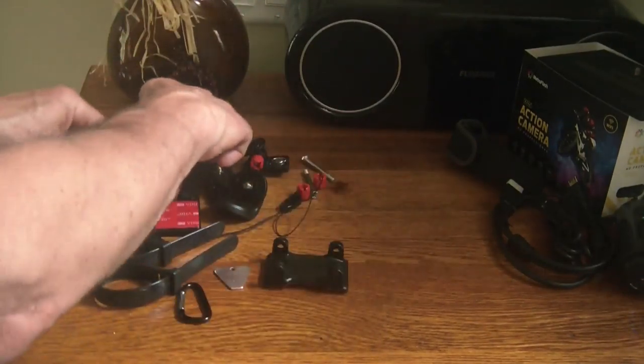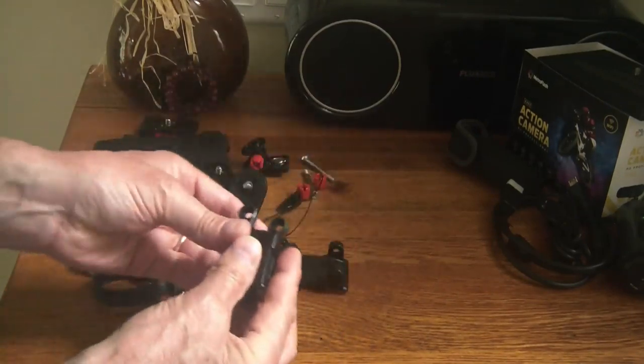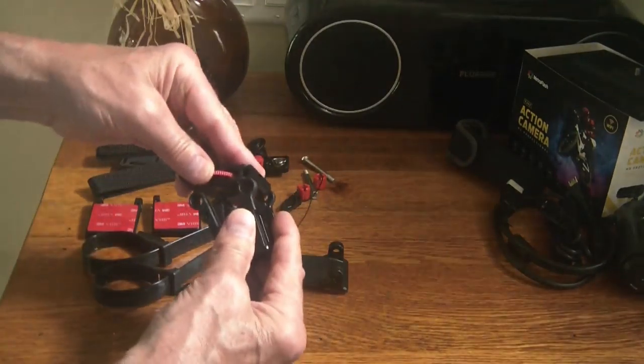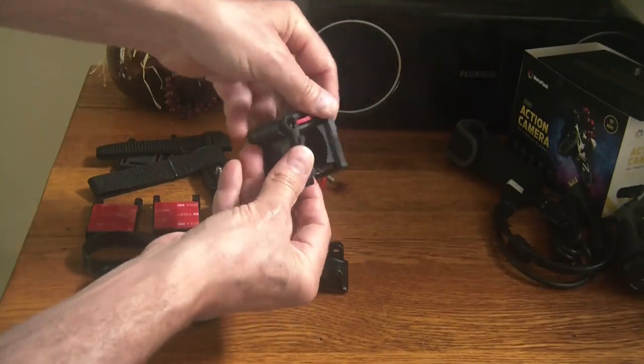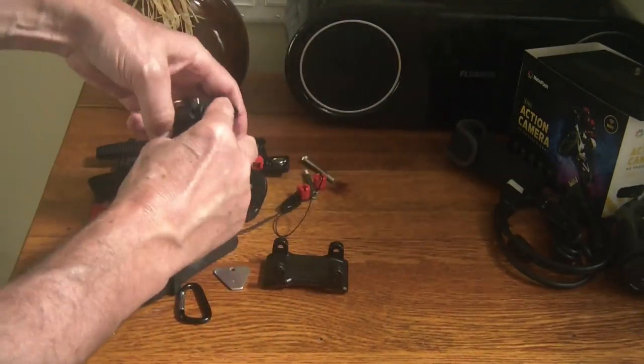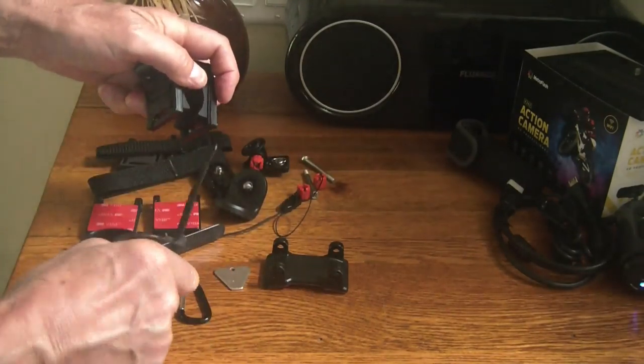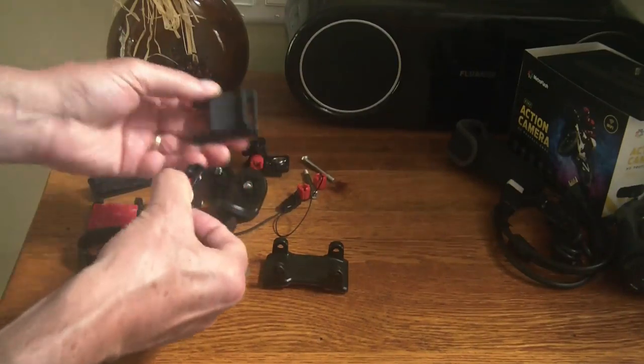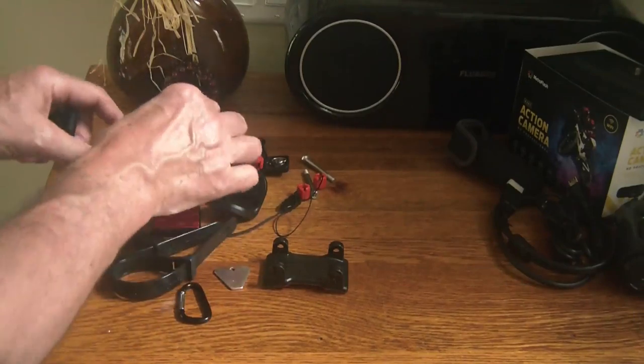Then you also get the roll bar slash handle bar mount. I don't particularly like how this works but this is the only one that they provide. So basically you have to attach it like this, then around the handle bar and then you use these bolts to tighten everything up and then you have to use one of these loops at the bottom to tighten it up and it's just very cumbersome. I would highly recommend if you want to use this on a bicycle that you get a proper handle bar mount and you will be richly rewarded.